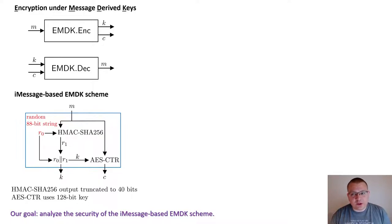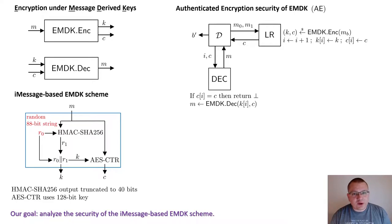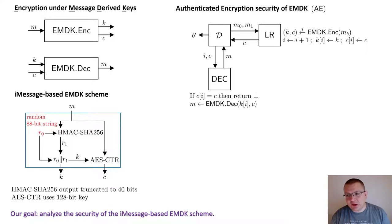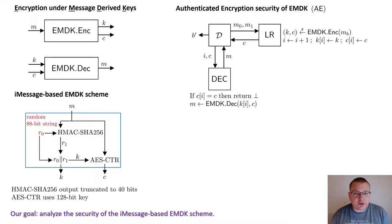Our goal is to analyze the security of the scheme, so let us define the two necessary security notions. First, we define the authenticated encryption security of an EMDK scheme. The security game provides the adversary with access to the left-or-right oracle and to the decryption oracle. Each call to the left-or-right oracle generates a distinct secret key, so each decryption oracle call must indicate the index i of the secret key to be used. The adversary must guess the challenge bit and is not allowed to trivially win by querying the decryption oracle on a ciphertext returned by the left-or-right oracle with the corresponding key index.